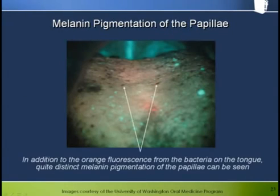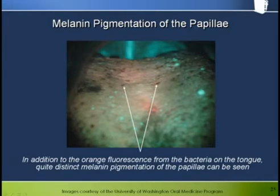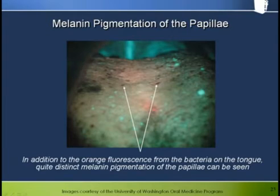In addition to the orange fluorescence from the bacteria on the tongue, quite distinct melanin pigmentation of the papilla can be seen here under fluorescence. As we might expect, the melanin pigmented papilla also appeared quite dark in white light.